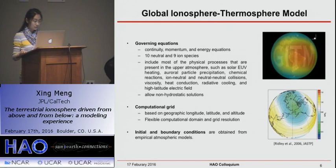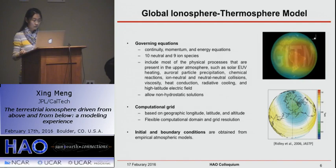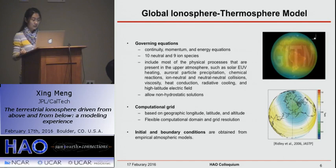The computational grid of GITM is based on geographic longitude, latitude, and altitude — another difference from TIE-GCM, which uses pressure levels in the vertical direction. We have a very flexible computational domain and grid resolution, making the simulation flexible in terms of regional interest and different applications. Initial and boundary conditions are obtained from empirical atmospheric models, including MSIS, which provides neutral density and temperature background in the lower and neutral atmosphere, and the horizontal wind model, which provides the wind state.